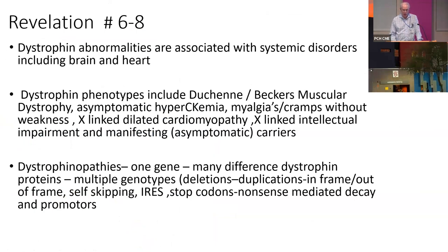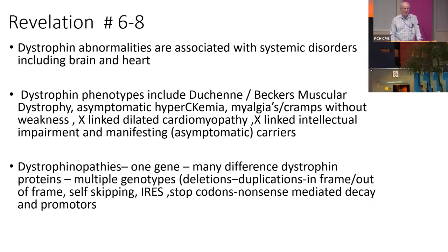Dystrophin abnormalities are associated with systemic disorders including brain and heart. Heart and muscle disease are not necessarily concordant — you can have severe cardiac disease with mild muscle disease or vice versa. The phenotypic spectrum is broad: Duchenne's, Becker's, asymptomatic hyper-CKemia, cramps and myalgias, X-linked dilated cardiomyopathy, X-linked intellectual impairment with or without muscle disease, and maternal carriers who can have symptoms including cramps, myalgias, and cognitive dysfunction. One gene, many different dystrophin proteins, many different genotypes.